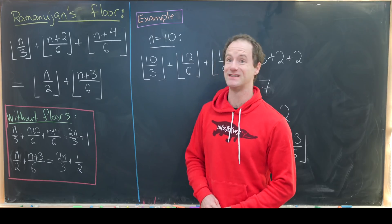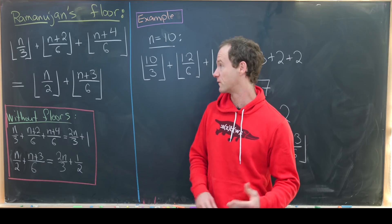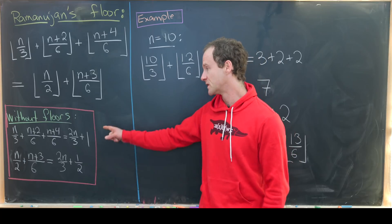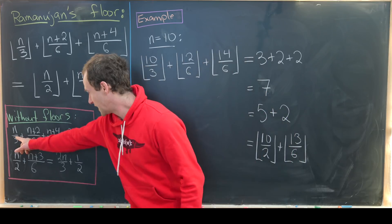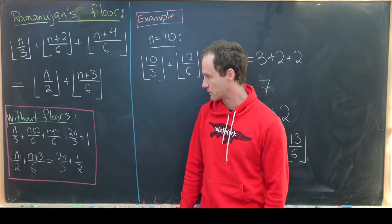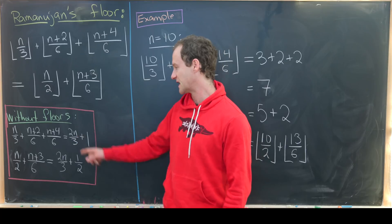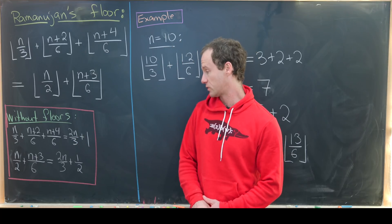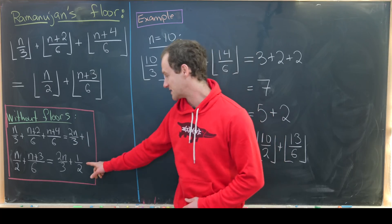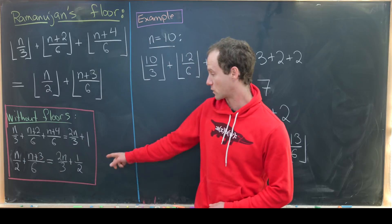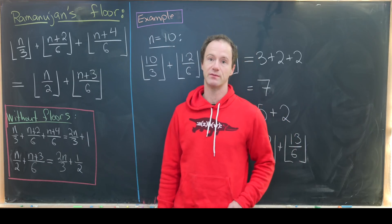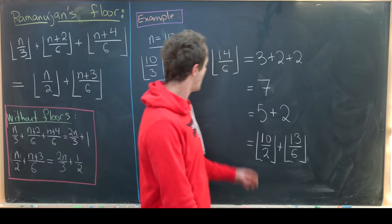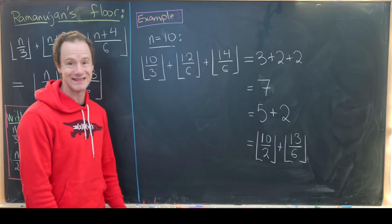I want to point out that this is not true if you remove the floor function from each of these summands. Notice we would have n/3 + (n+2)/6 + (n+4)/6, which gives 2n/3 + 1, whereas the right-hand sum without the floors gives 2n/3 + 1/2. Those are clearly not the same.